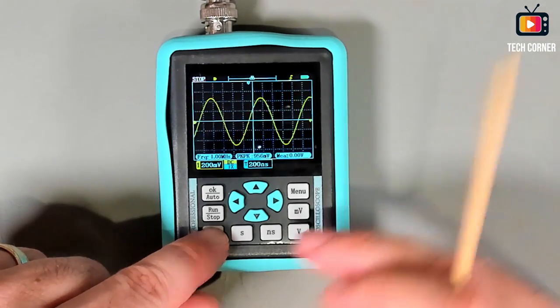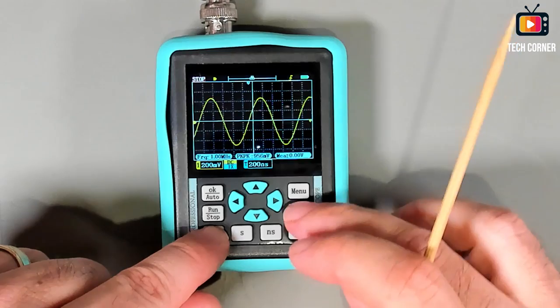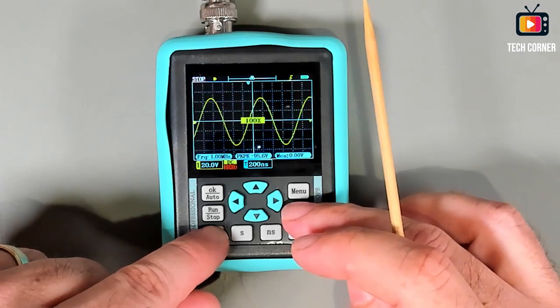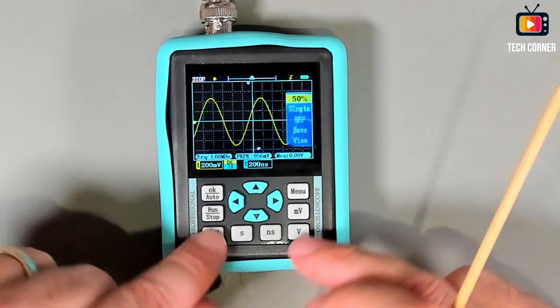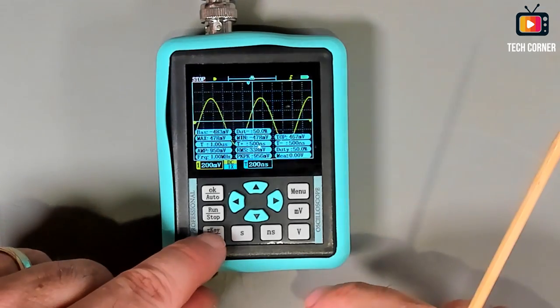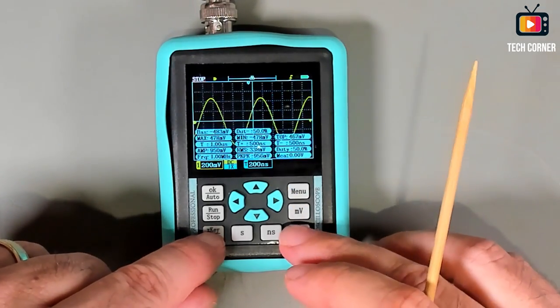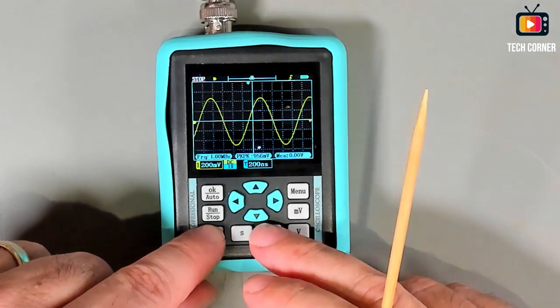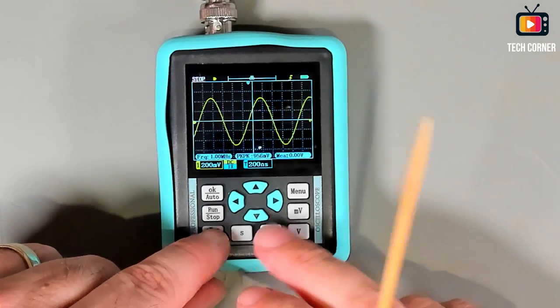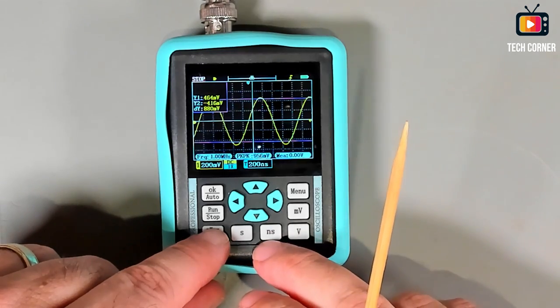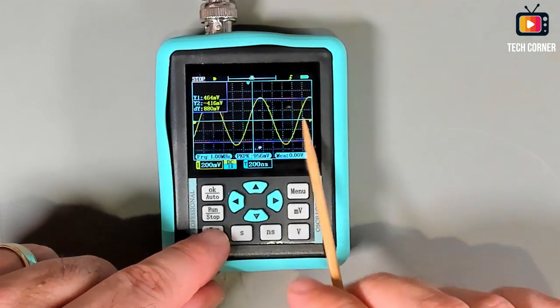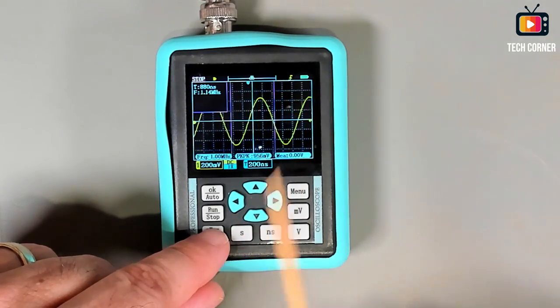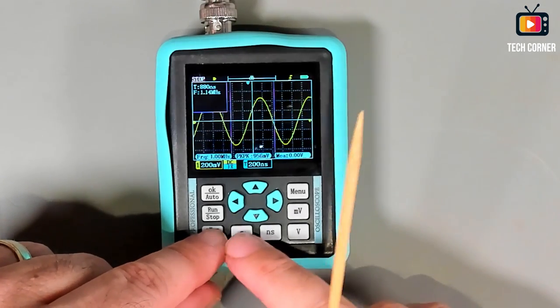In normal mode you can see the trace in memory like this and you can change the offset. Every key can be combined with the X key. For example, if you press the X key or power and menu, you can change AC coupling or DC coupling. If you press X key and millivolts option, you can change the attenuation from a probe in 10 times, 100 times or one time.